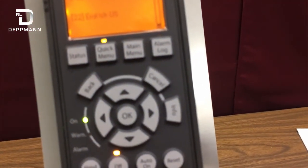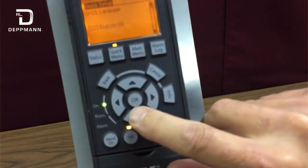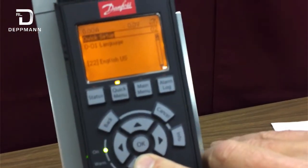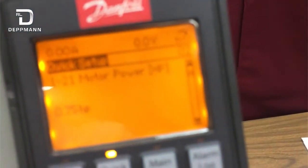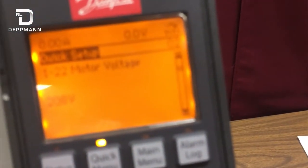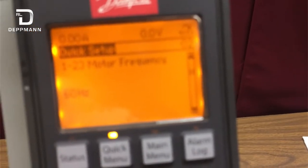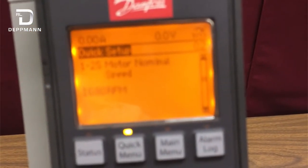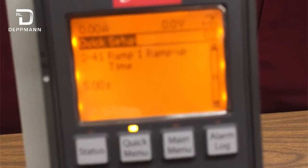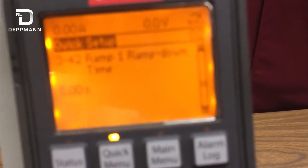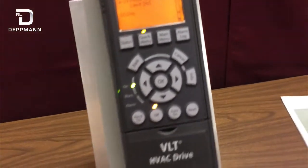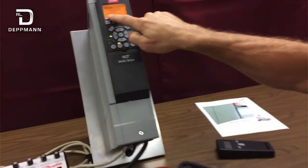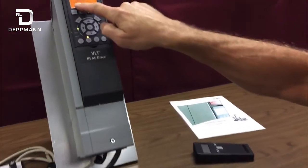That brings us into that menu. Now we can scroll down, and keep your eye on the parameter number here. We're going to scroll down until we get to parameter 4-14. So just keep pushing that down button, and there it is, 4-14, motor speed high limit. You can see right now that it's set for a maximum of 60 Hz.